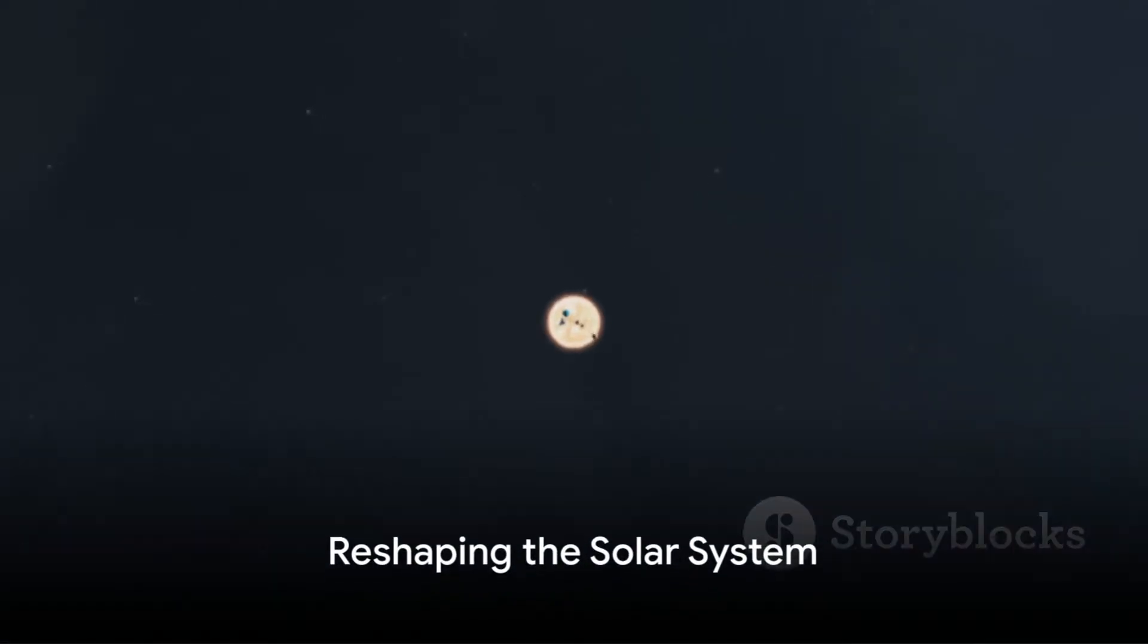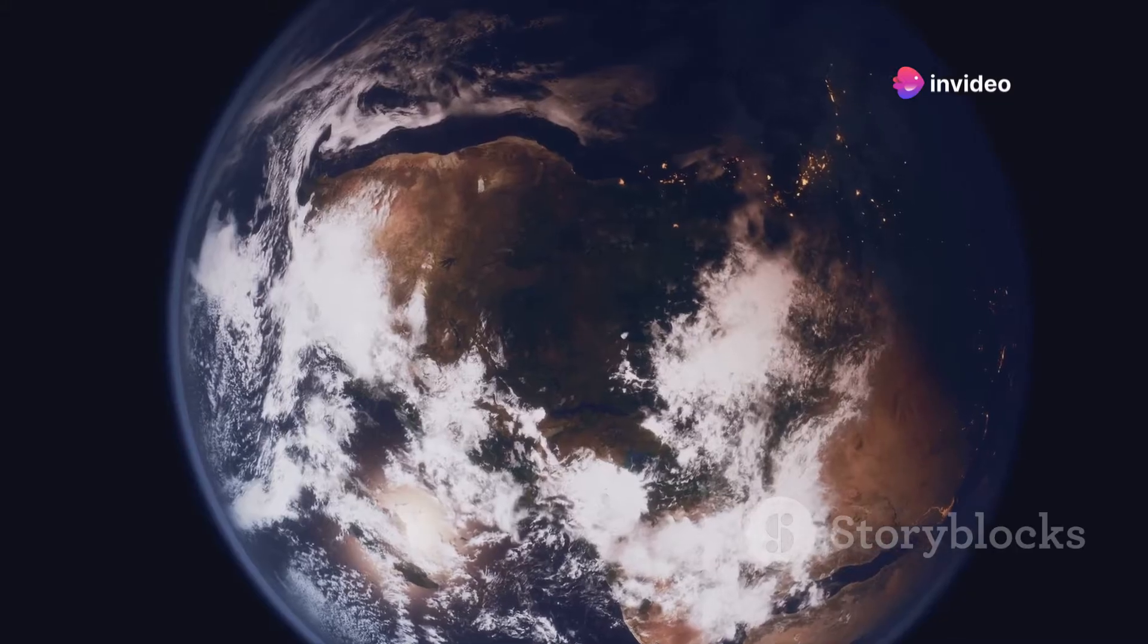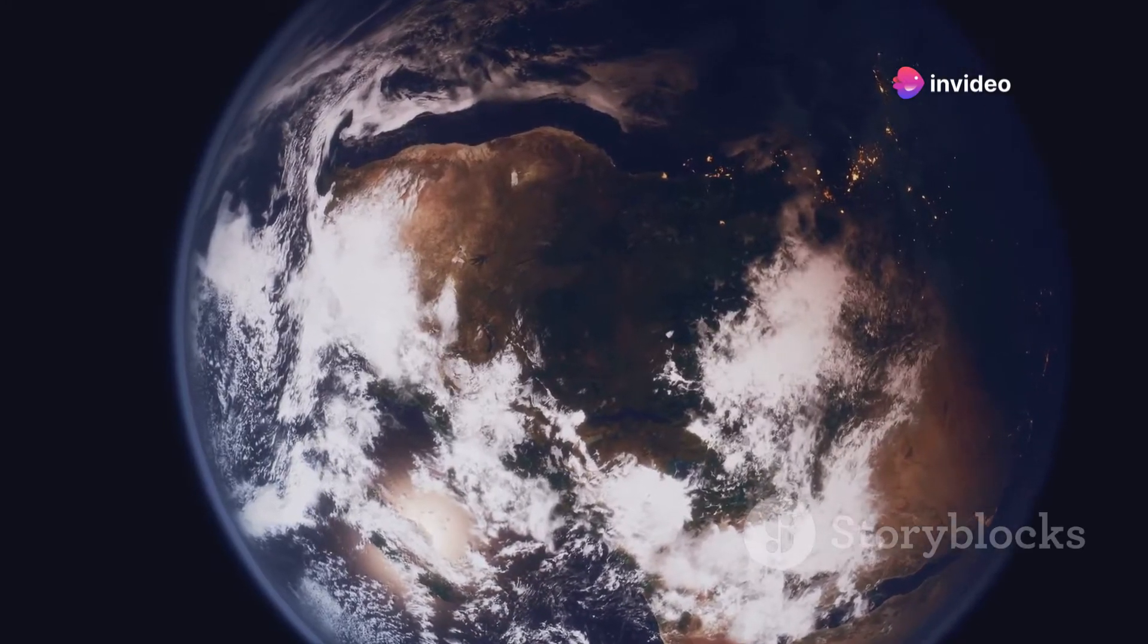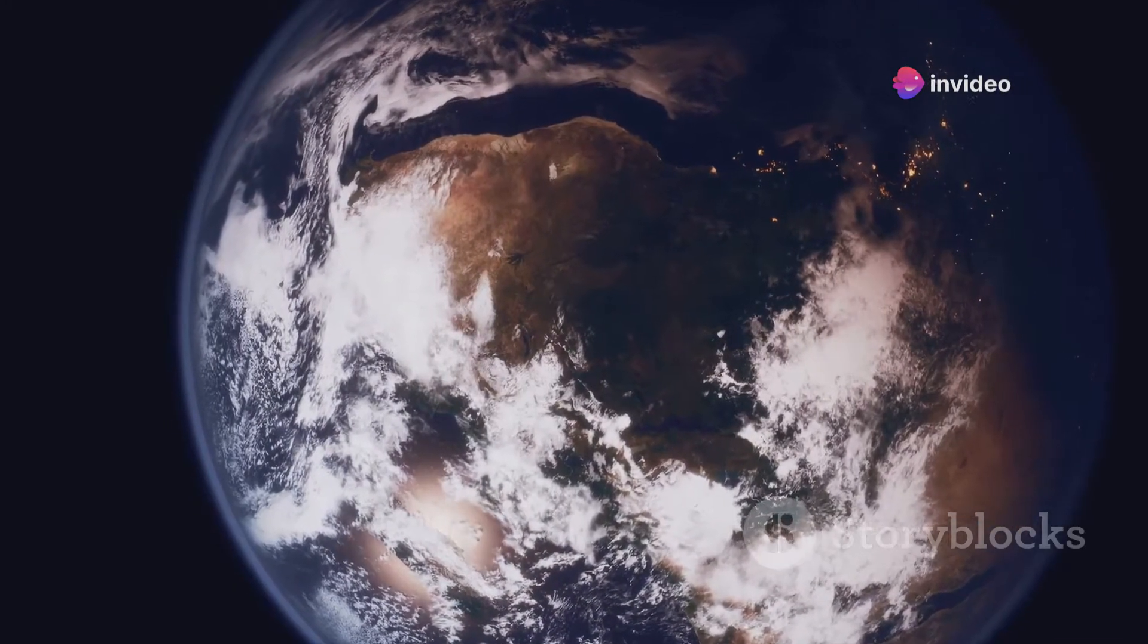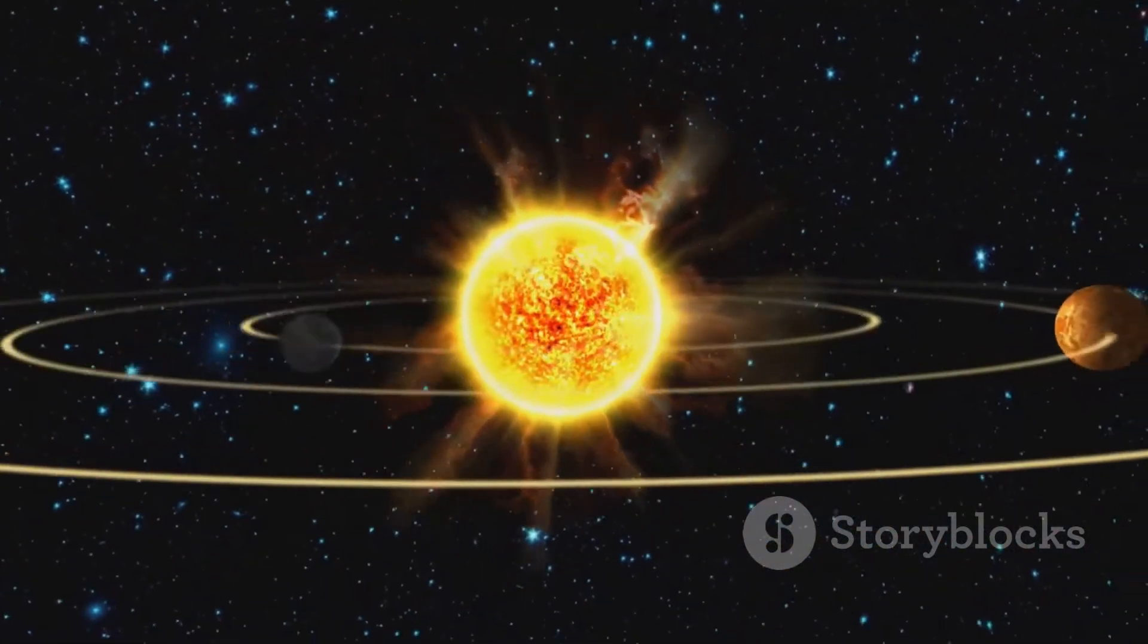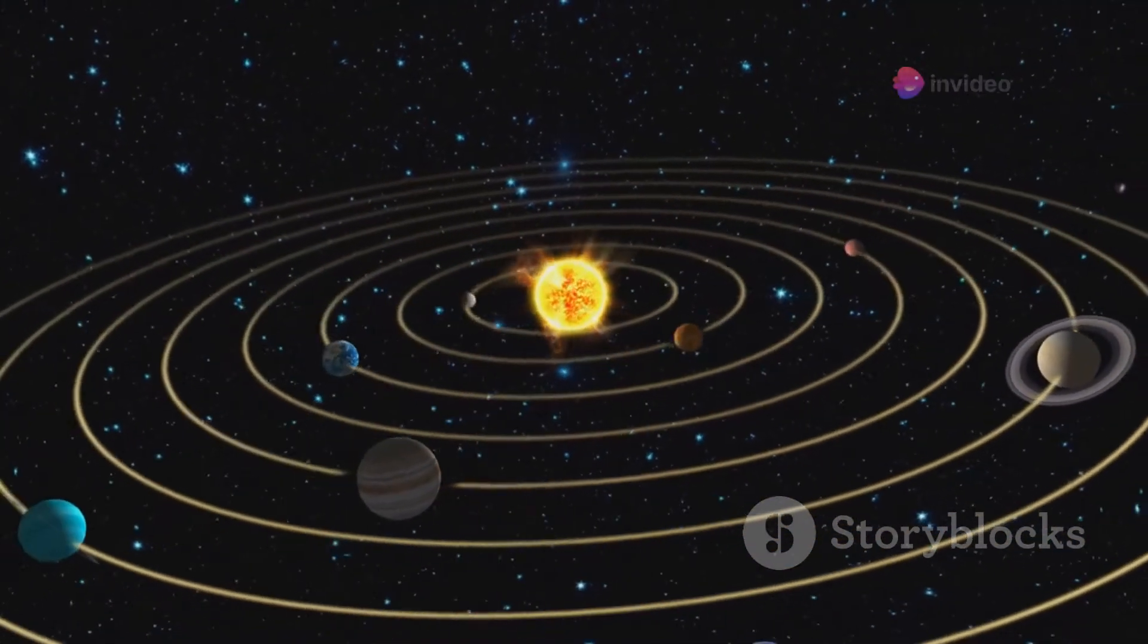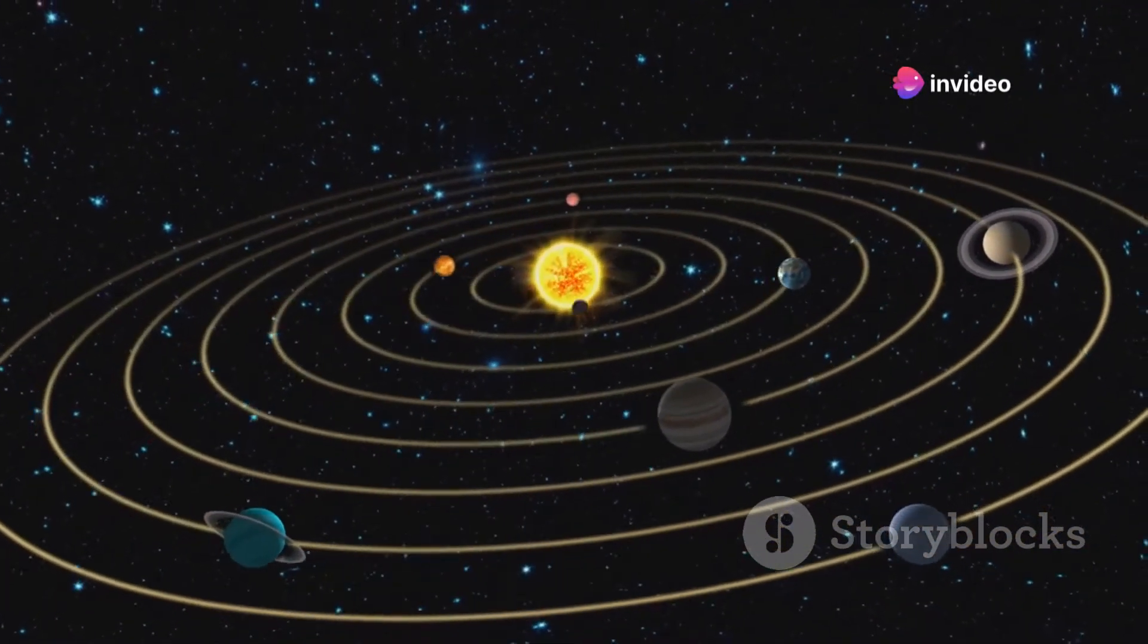An Earth as large as the Sun would not live in isolation. Imagine a solar system where Earth swells to match the size and mass of the Sun. This gargantuan planet would drastically alter the celestial dance we've come to understand. The gravitational pull of this supersized Earth would tug at the very fabric of our solar system, reshaping the orbits of its planetary siblings.